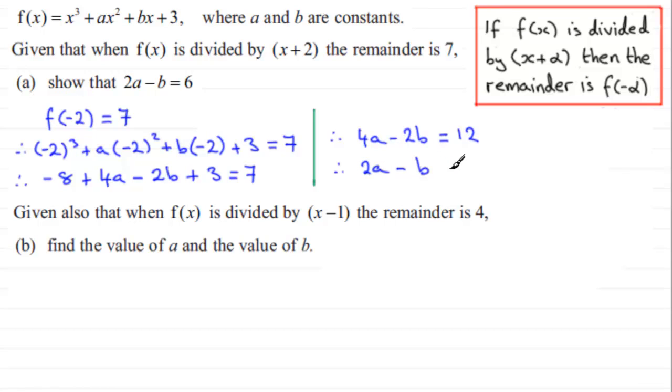Now I can divide all the terms by 2 and I get therefore 2a minus b equals 6, and that's what we had to show.